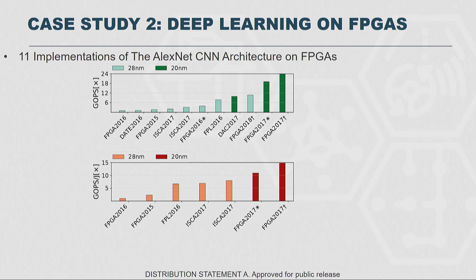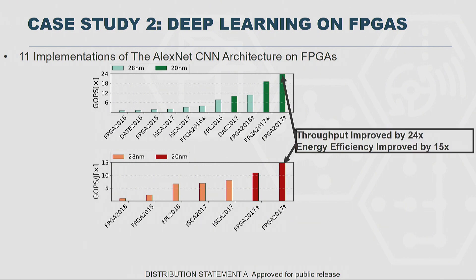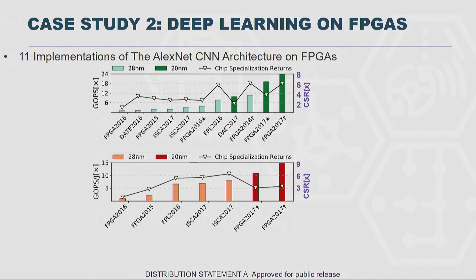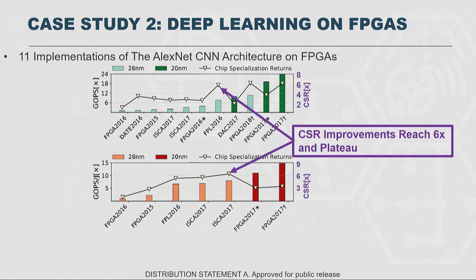Case study number two: deep learning accelerators. We use FPGAs here instead of ASICs because that's where we were able to get the data. Once again, as time has gone on, people have improved throughput and energy efficiency. But what happened with specialization — were people able to keep specializing time and time again? When we plot chip specialization return, we see that it actually has gone up, and a lot of this has been due to new algorithms. This has been a relatively emerging space. We've seen specialization advantage go up about 6x, but then it has also plateaued. The takeaway: emerging domains still have potential to improve performance, but they probably also plateau at some point.